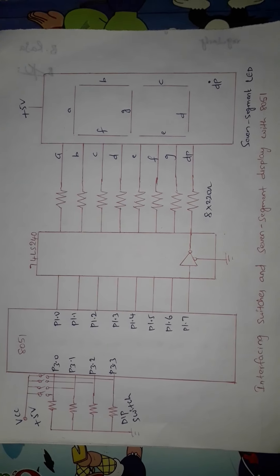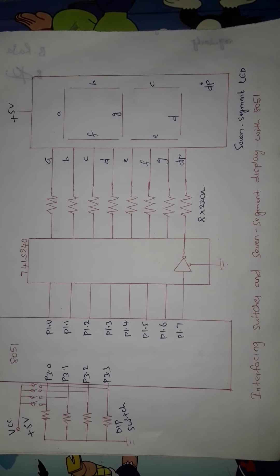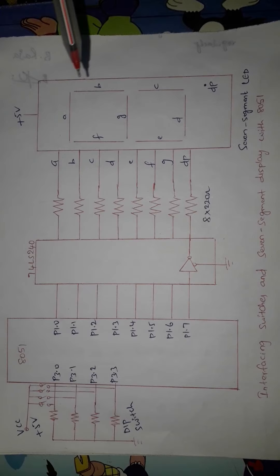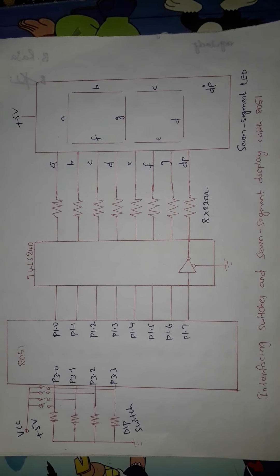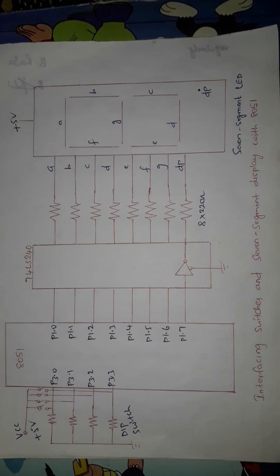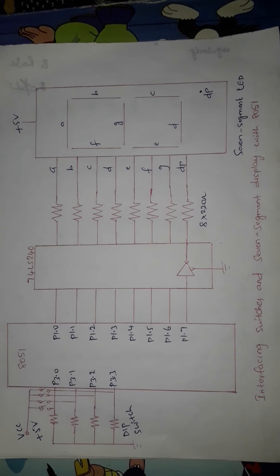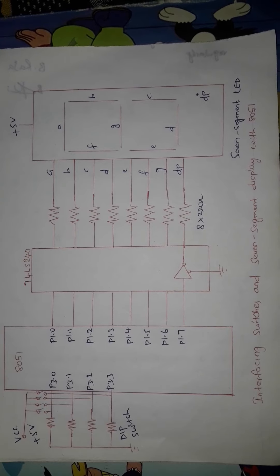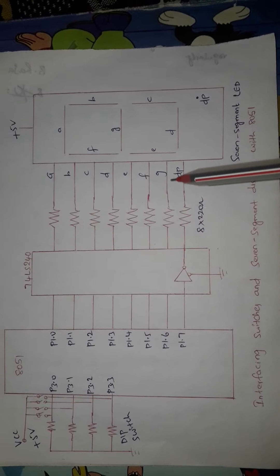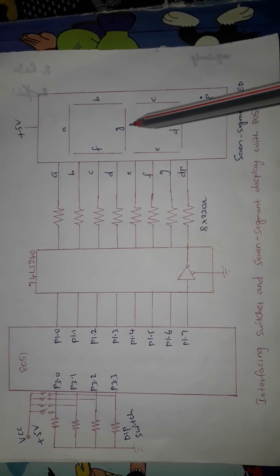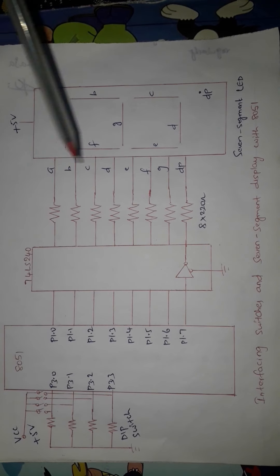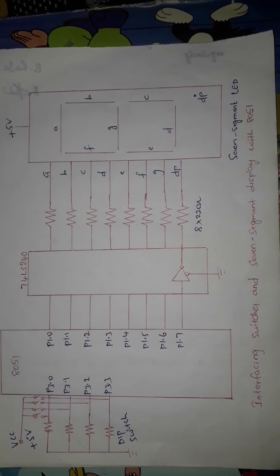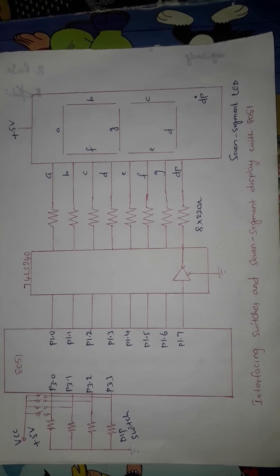Now let us see how to interface seven segment displays with the 8051. We are showing interfacing of one seven segment display, which can display only one number or character. If you want to display many values, you can connect more seven segment displays to the 8051 using peripheral ports like the 8255 PPI. The seven segment LED with eight segments including DP is connected to port 1 of the 8051.